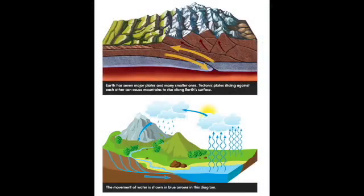Earth has seven major plates and many smaller ones. Tectonic plates sliding against each other can cause mountains to rise along Earth's surface. The movement of water is shown in blue arrows in this diagram.